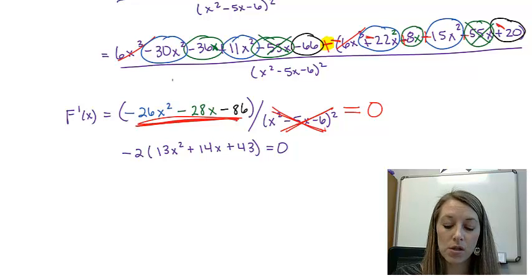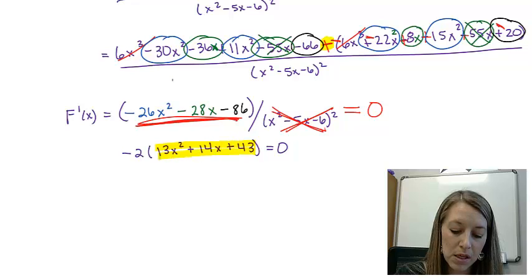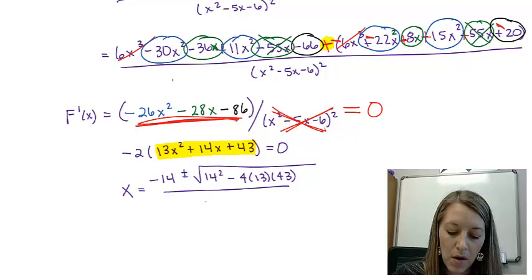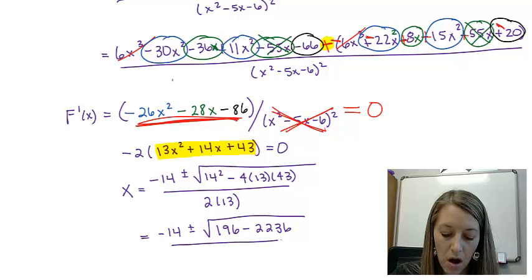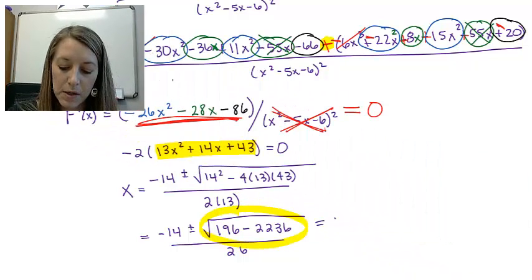So we can try and continue to solve this by factoring, but unfortunately it doesn't factor. So what I'm going to do with this inside piece here then is to do my quadratic formula. So I have x equals negative b or negative 14 plus or minus square root of b², 14², minus 4 times my a value of 13 times my c value of 43, all over 2 times my a value. Gives me negative 14 plus or minus a positive 196 minus 2,236, all over 26. If I simplify this square root, that gives me square root of negative 2,040.